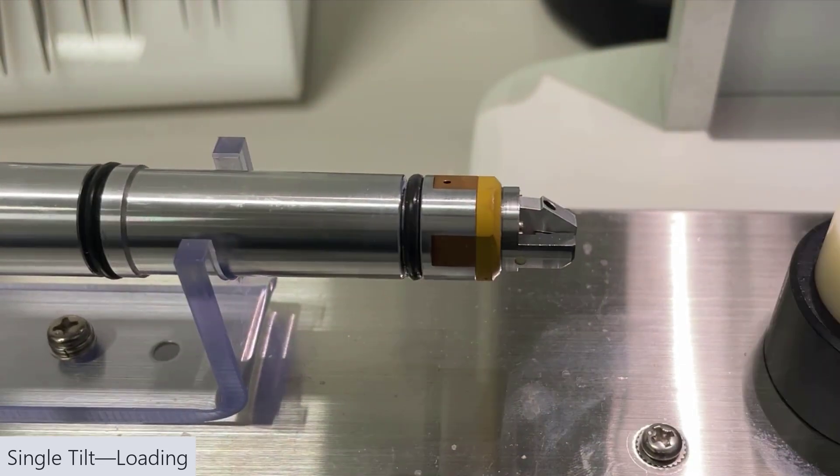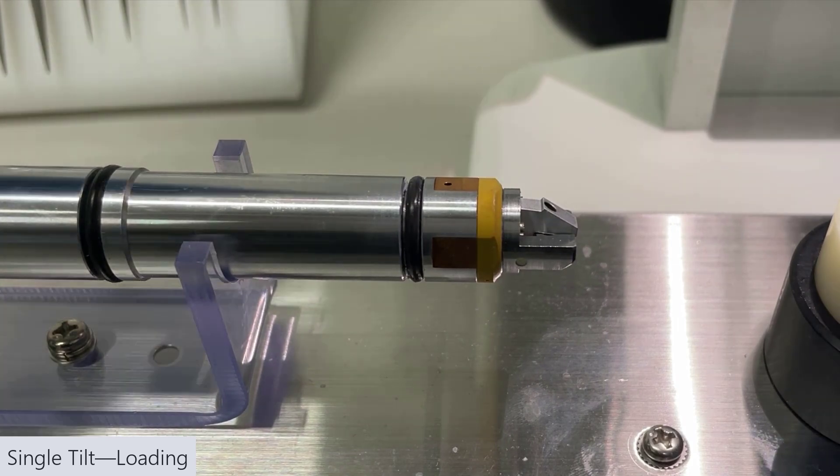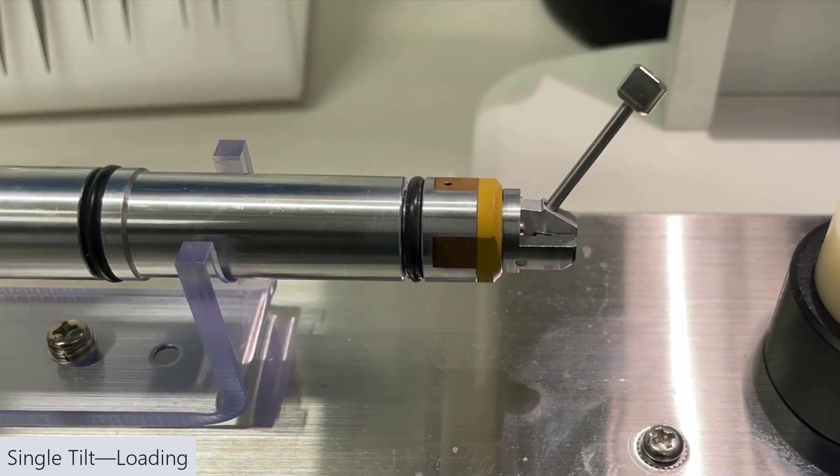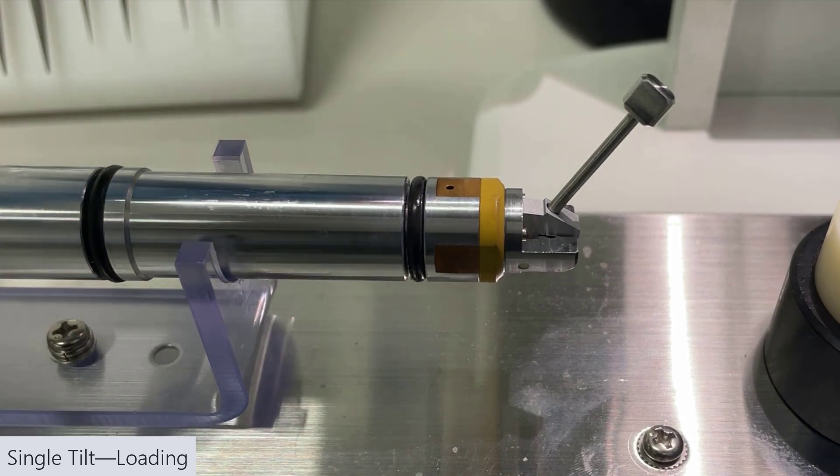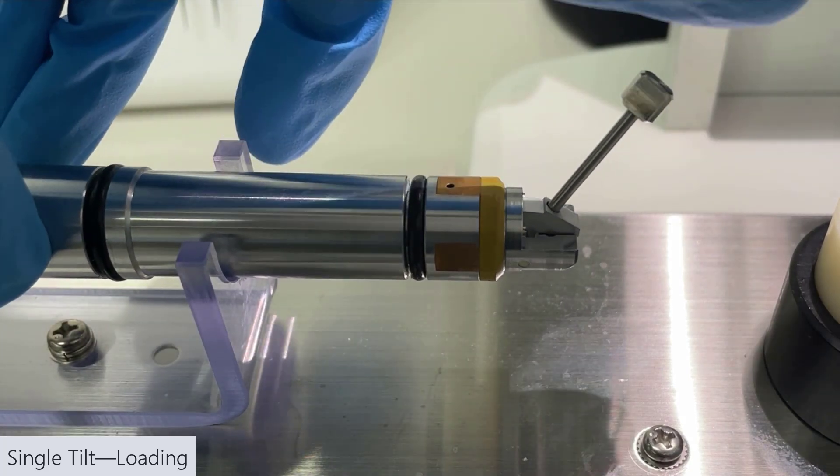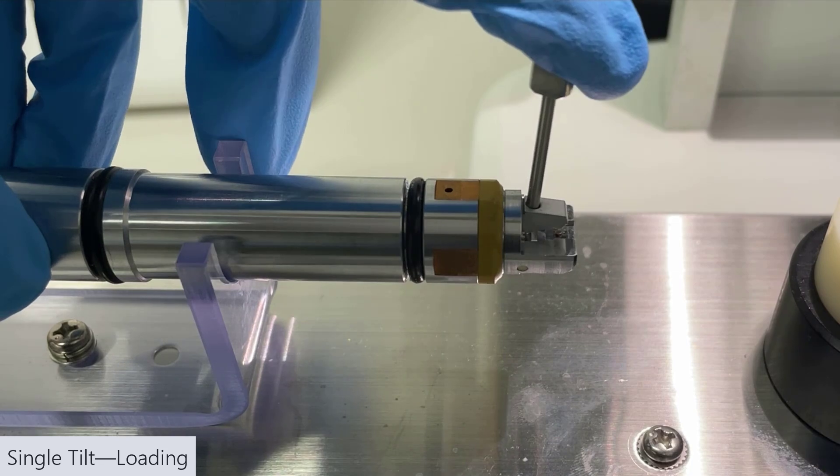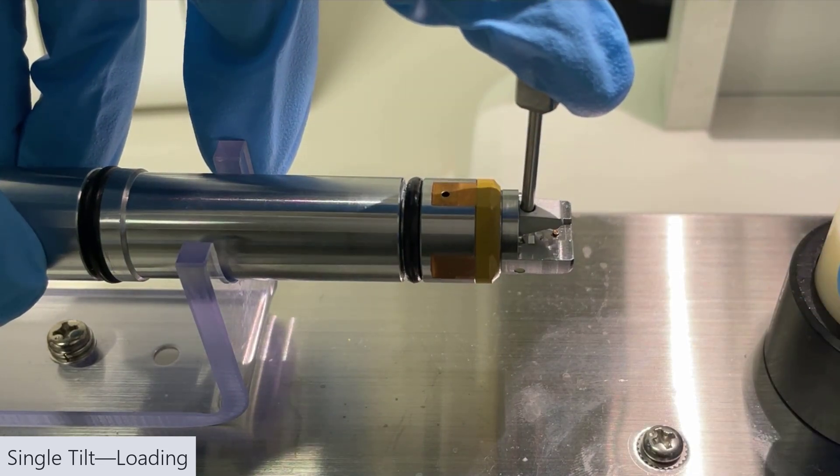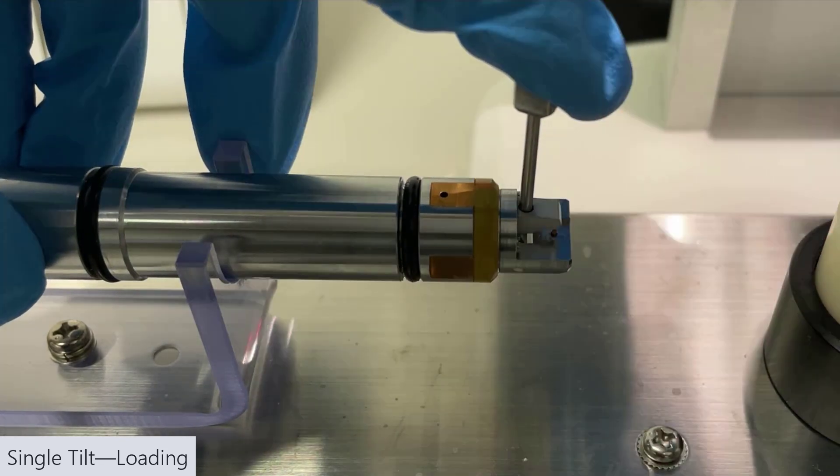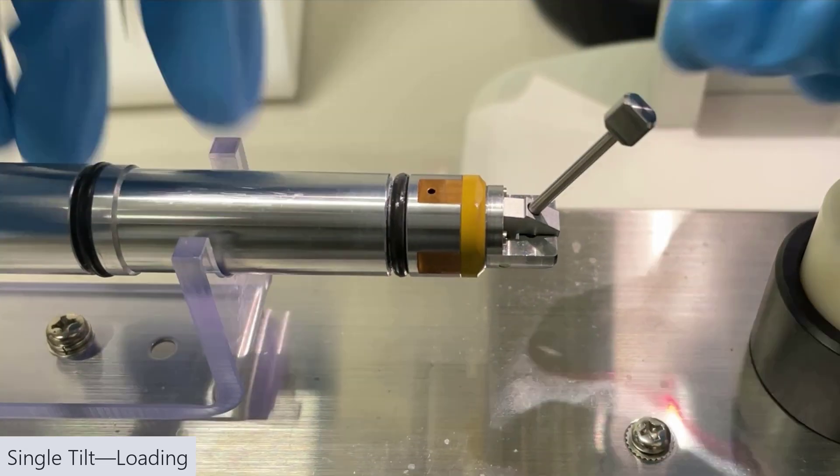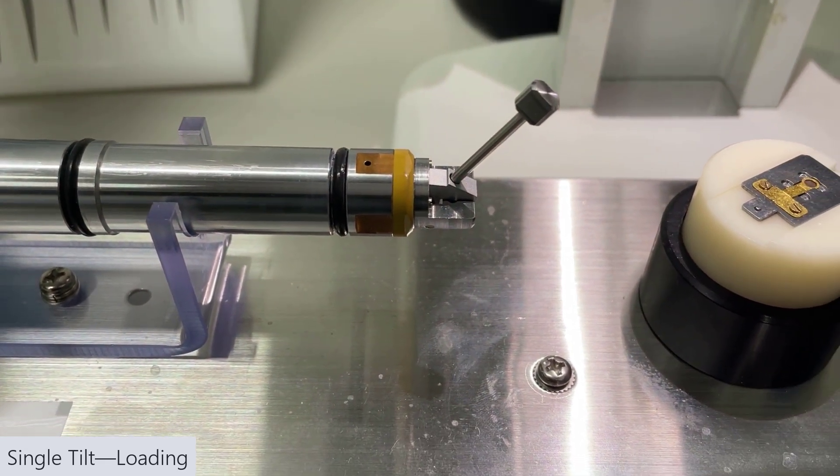To do that, we're going to grab a little metal rod that comes with the holder and put it in the hole there on the top. Now if you grip the holder rod, you'll be able to see that there's a little pin when we pull it back. We want our blade, the hole at the end of the blade, to fit into that pin.